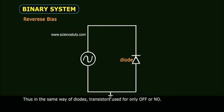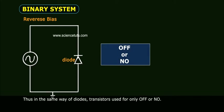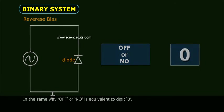In the same way of diodes, transistors used for only off or no. In the same way, off or no is equivalent to digit zero.